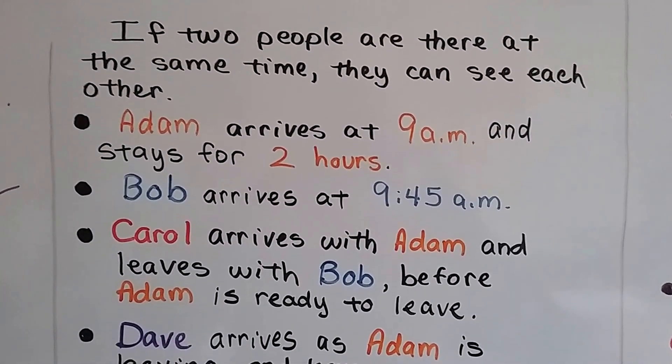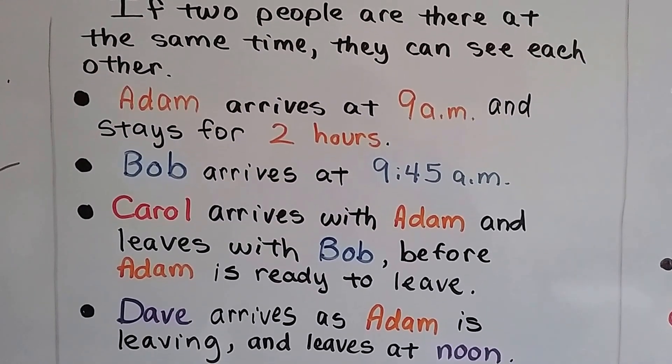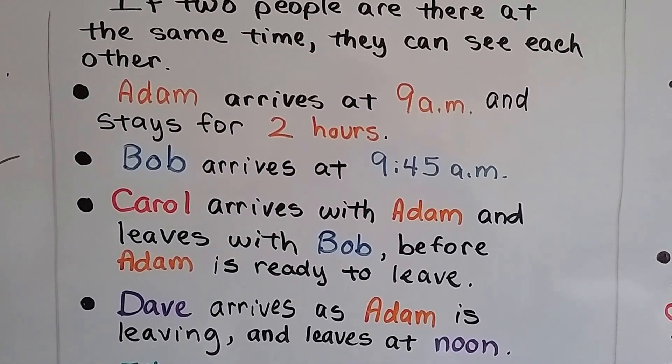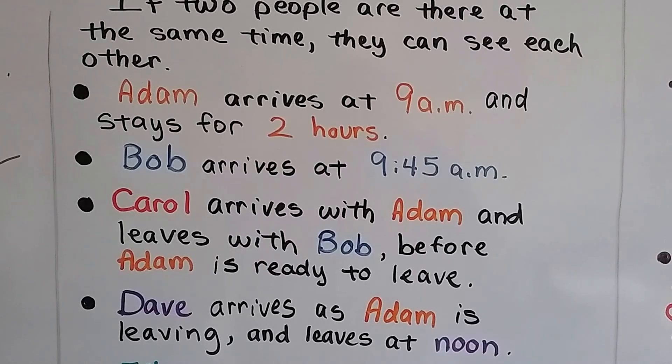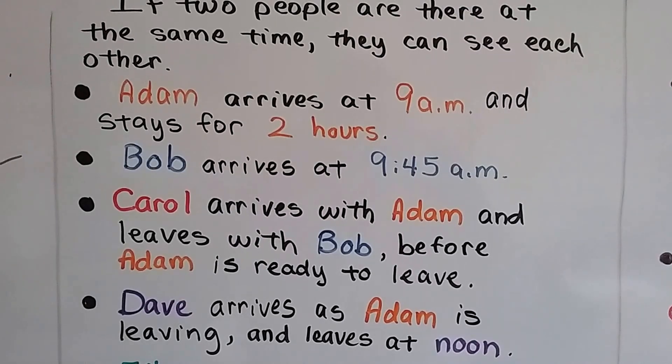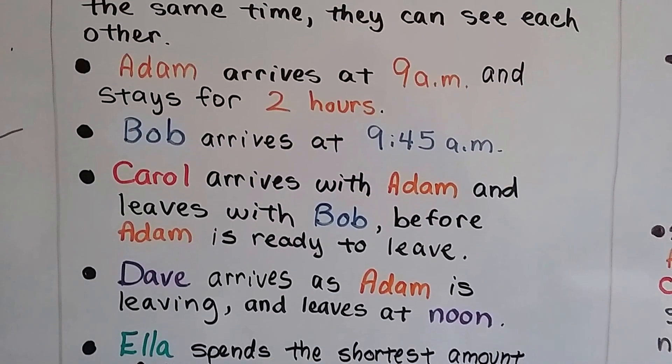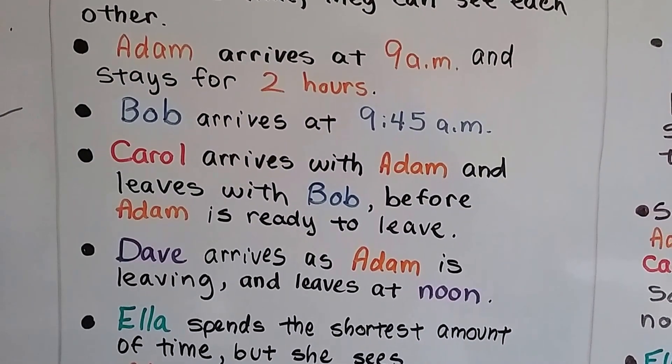Bob arrives at 9:45 a.m. Carol arrives with Adam and leaves with Bob before Adam is ready to leave. Now we've got people coming and going. Dave arrives as Adam is leaving and he leaves at noon.